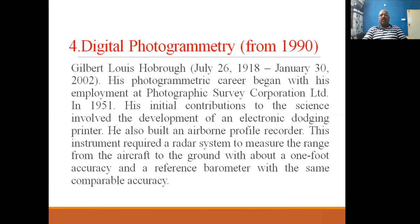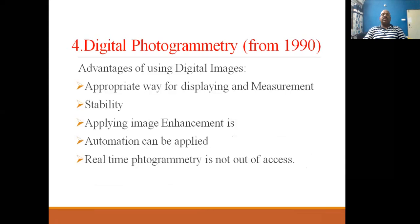Digital photogrammetry, the last generation from 1990 onwards, is totally digital — using images composed of rows and columns of pixels. The output is directly used as input for GIS. Advantages include appropriate display and measurement stability, applying image enhancement to increase image quality, automatic processing, and real-time photogrammetry.